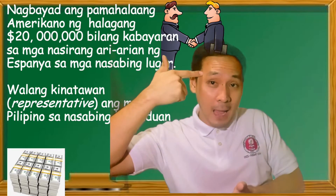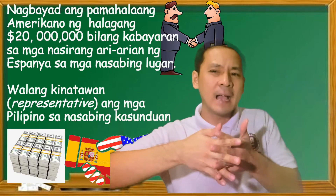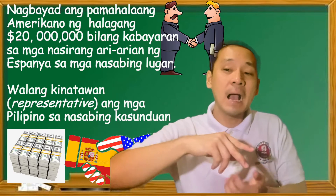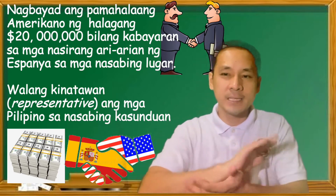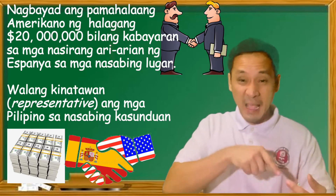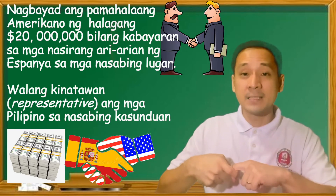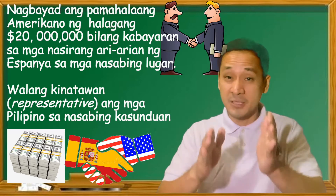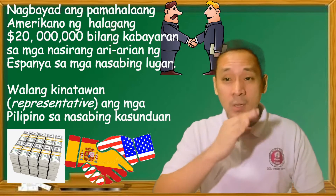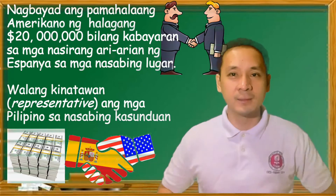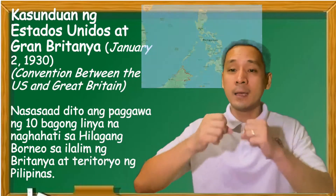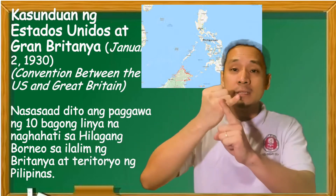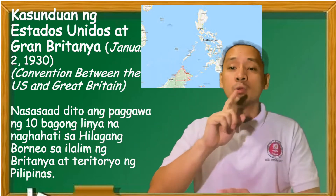Umbayad ang pamahalaang Amerikano ng halagang 20 million dollars bilang kabayaran sa mga nasirang ari-arian ng Espanya sa nasabing mga lugar. Walang kinatawan o representative ang mga Pilipino sa nasabing kasunduan.